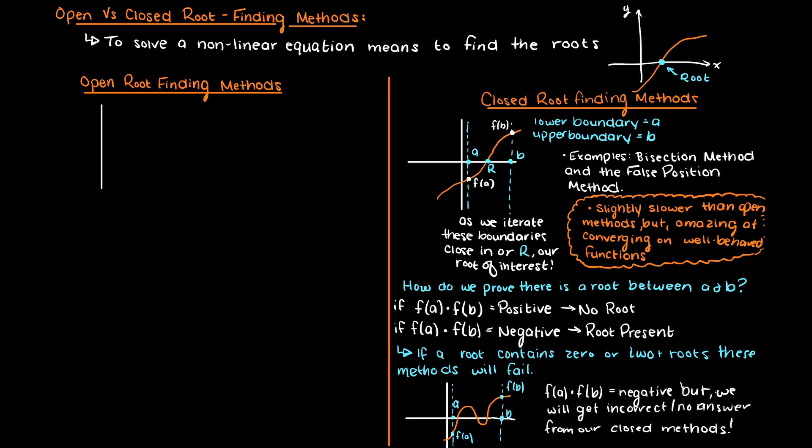An open root finding method finds a root through an initial guess as to where we think the root may be. Instead of defining an upper and lower boundary isolating our root like we did in closed root finding methods,